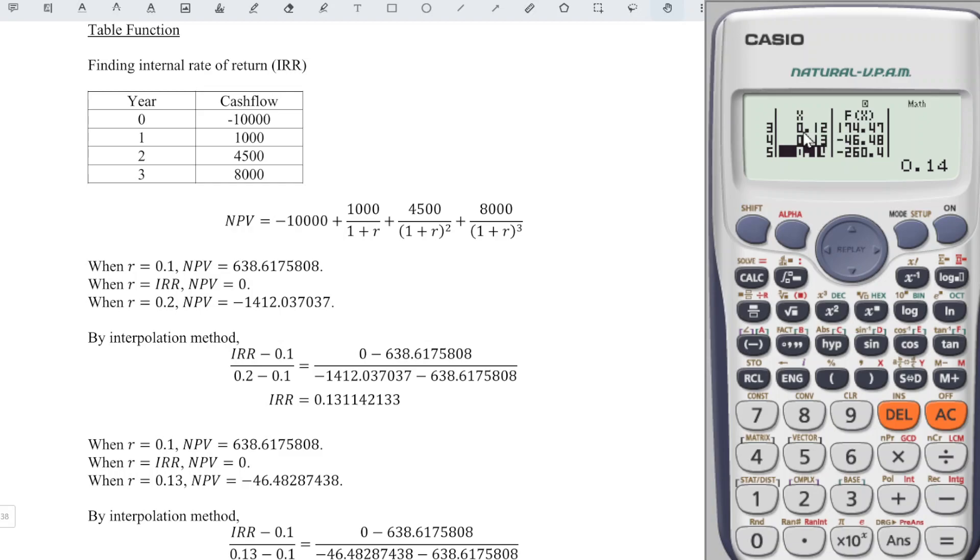Now from here we can see that the values should be between 0.12 and 0.13. So we press AC again, equal, equal, start change to 0.12, press equal, and change to 0.13, press equal. Step also increases one decimal place to 0.001.